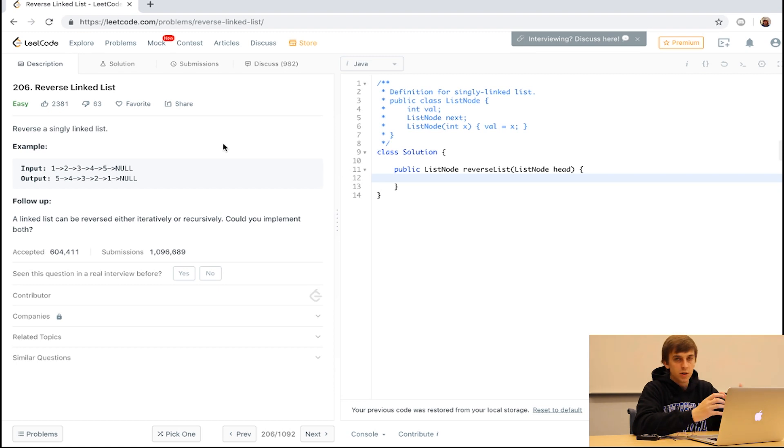Right now, we already just went over this on the whiteboard, but we're just going to reverse a singly linked list. Our input is the same as the one I just did on the board: one, two, three, four, five, null, and output would be the reverse. We're actually not given the whole list. When you're given a linked list, you're usually given reference to the head. So we're actually given reference to this one right here.